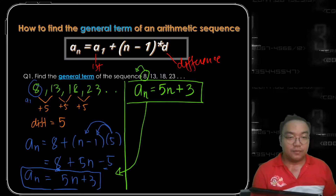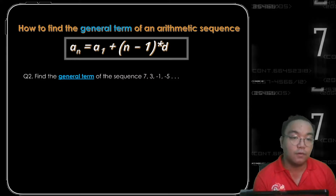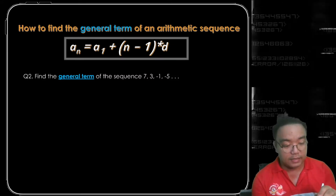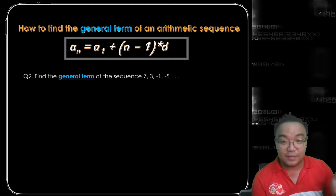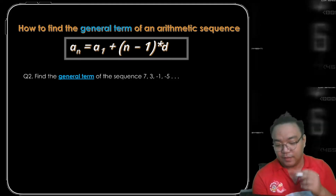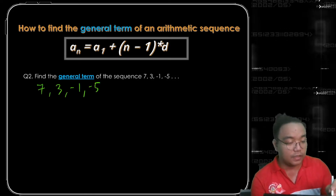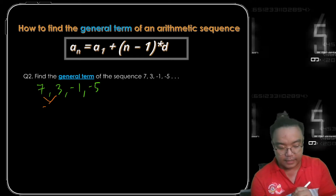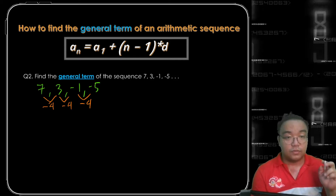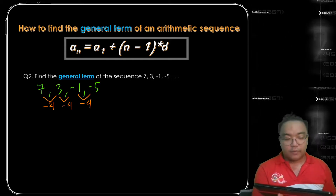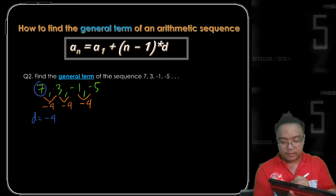Now let's apply both methods to the second example. We are asked to find the general term of the sequence 7, 3, negative 1, negative 5. So that you have an option to choose the easier one. Looking at the sequence, each value has a difference of negative 4 — every time you go to the next term you subtract 4. So our given data: d is negative 4 and a sub 1 is 7.